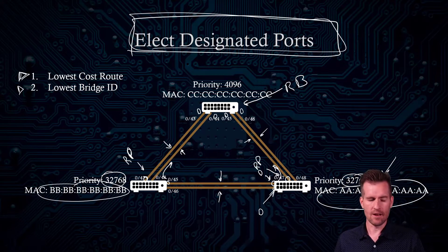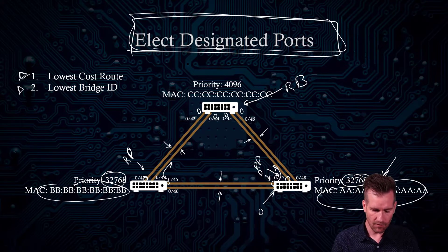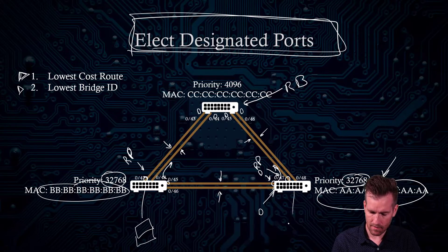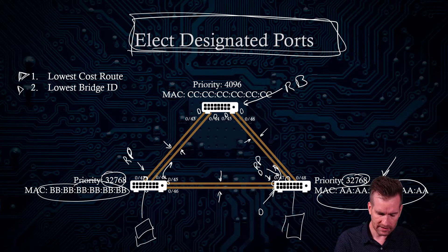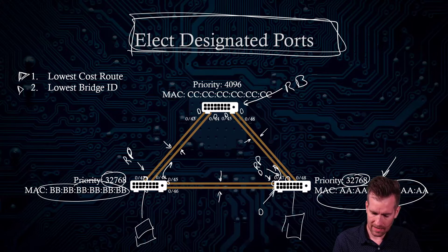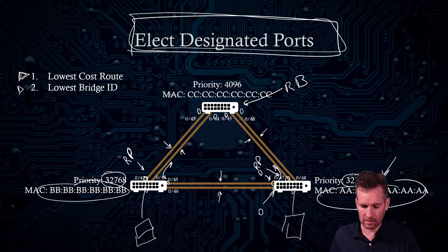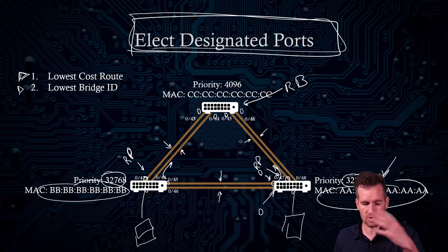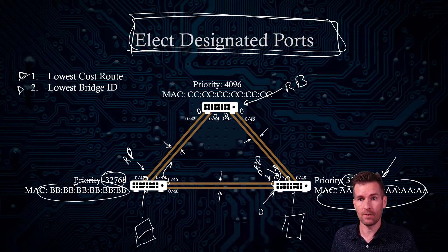One other thing to note: if you have any end devices hanging off the network — maybe a laptop or a server — whatever ports connect to those end devices are also designated ports. So designated ports are essentially the ports that are going to be up and running all the time.